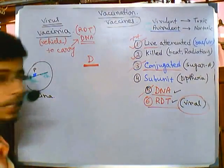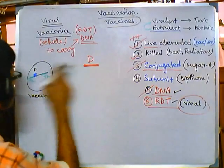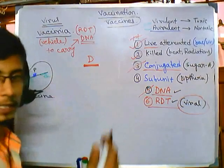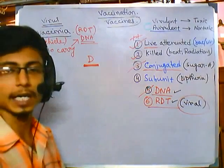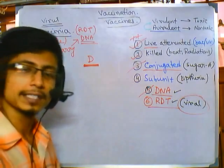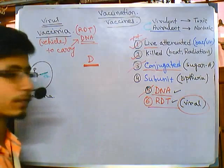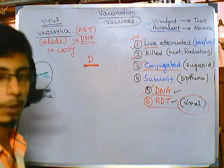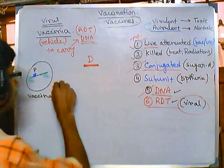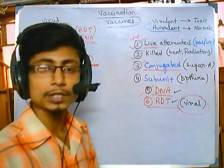This vaccinia virus is going to act as a vehicle to carry our desired gene. We need to incorporate that gene into the virus, placing it right behind the promoter sequence of vaccinia, so that the virus can replicate it and then carry out transcription and translation to produce the desired proteins.